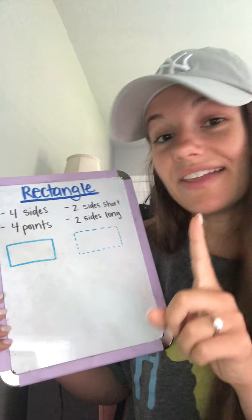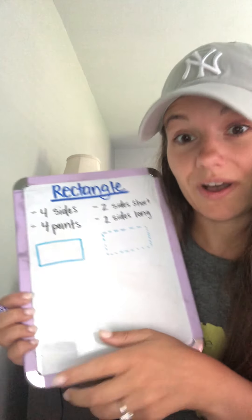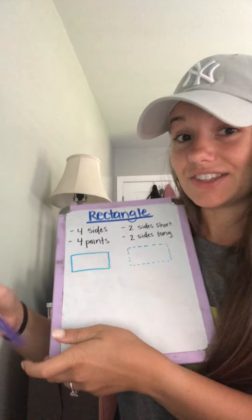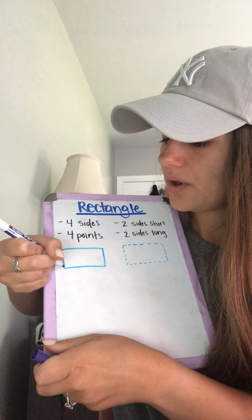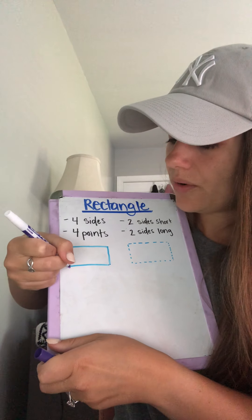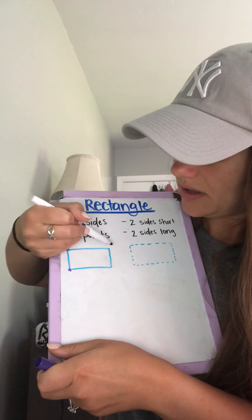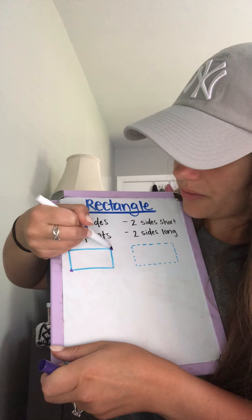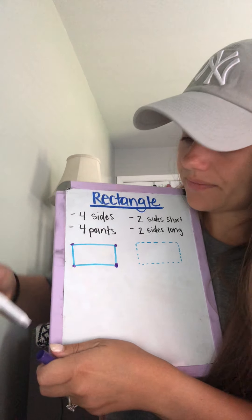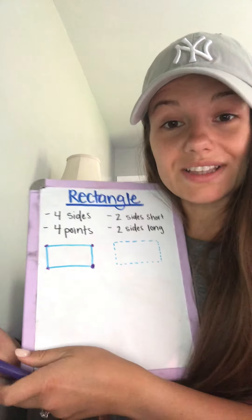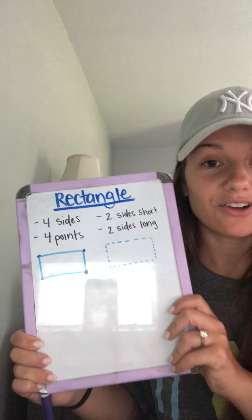Another reason it reminds me of a square is because it has four points as well. Let's look at that: one point, two, three, four. Four points and four sides is a rectangle.